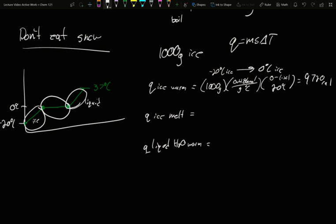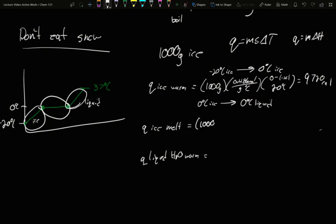Now we need to melt that ice. I was zero degrees Celsius ice, I'm going to become zero degrees Celsius liquid. My second step is Q equals m delta H. I don't have a temperature change, I have a phase change. My mass is still 1,000 grams. Delta H for melting for water was 79.7 calories per gram. So 79,700 calories, about eight times more than heating that ice up 20 degrees.